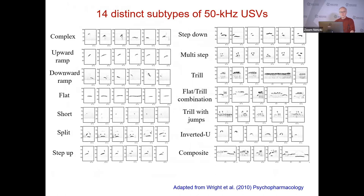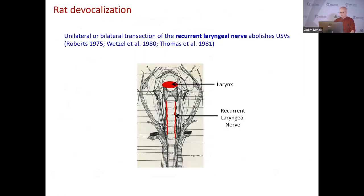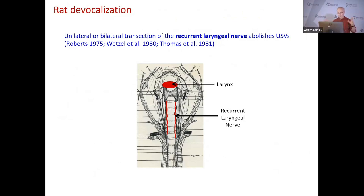We had to defocalize the rats to confirm these were actually vocalizations. When our veterinarian cut the laryngeal nerve, it silenced the animals virtually, so we were pretty confident we were dealing with vocalizations and not some artifact. At that point we thought this was going to conquer the world — everybody would start subtyping 14 different ways, it would produce standardization in the field. But it doesn't really happen that way.